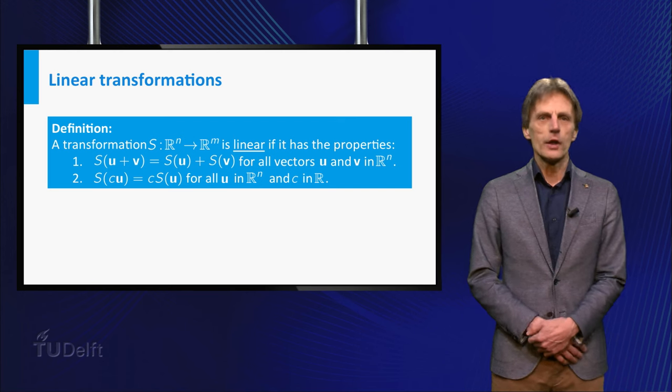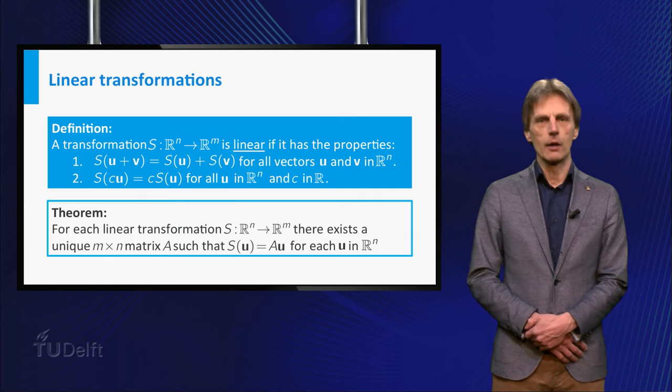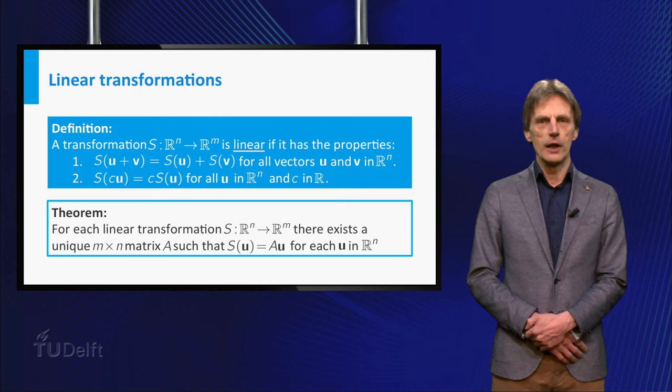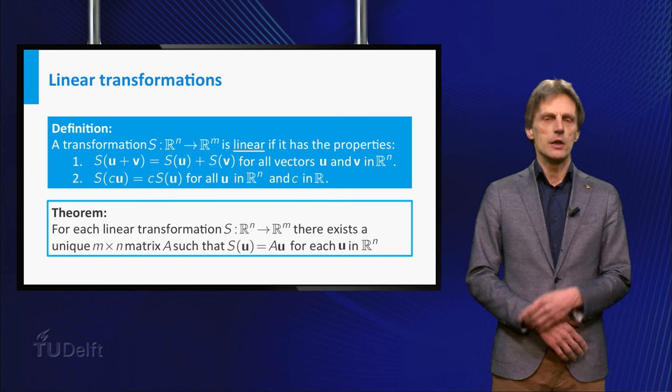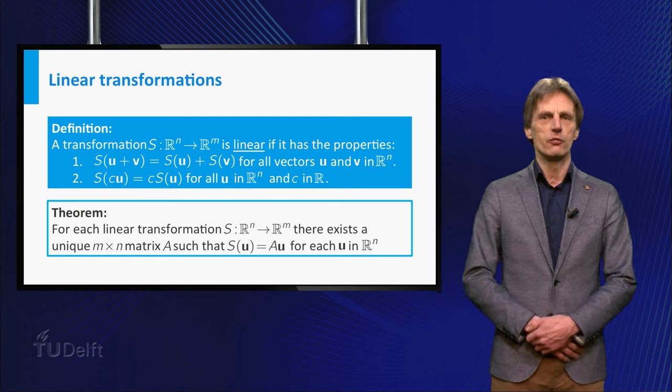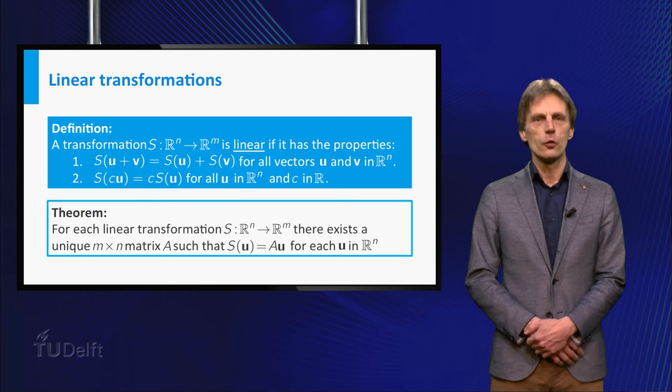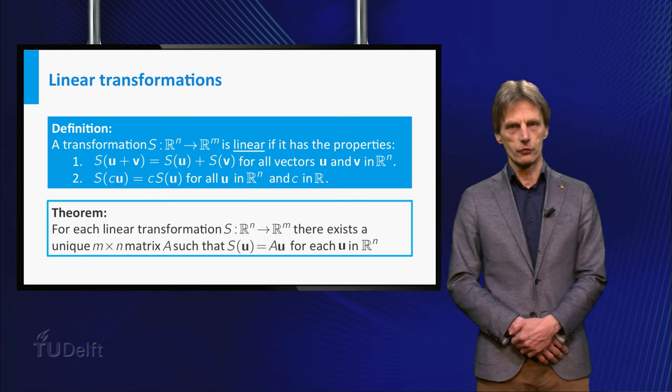Also recall that for each linear transformation S from Rn to Rm, there exists a unique m by n matrix A such that S of u is A times u for each vector u in Rn. This matrix A is called the standard matrix of the linear transformation S.